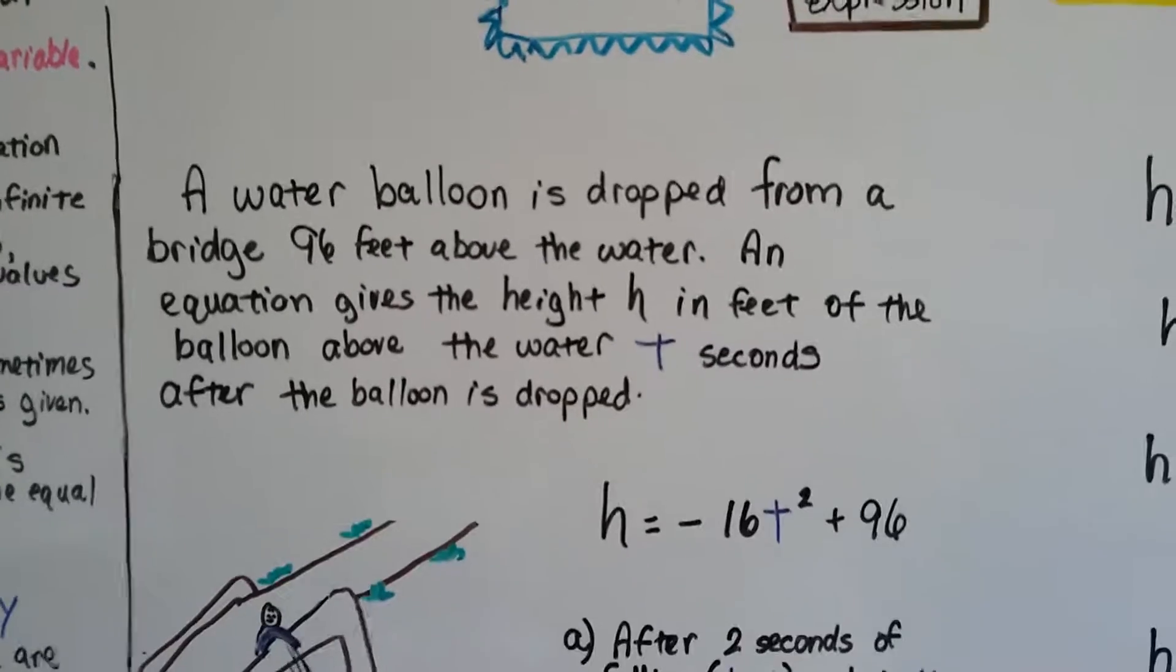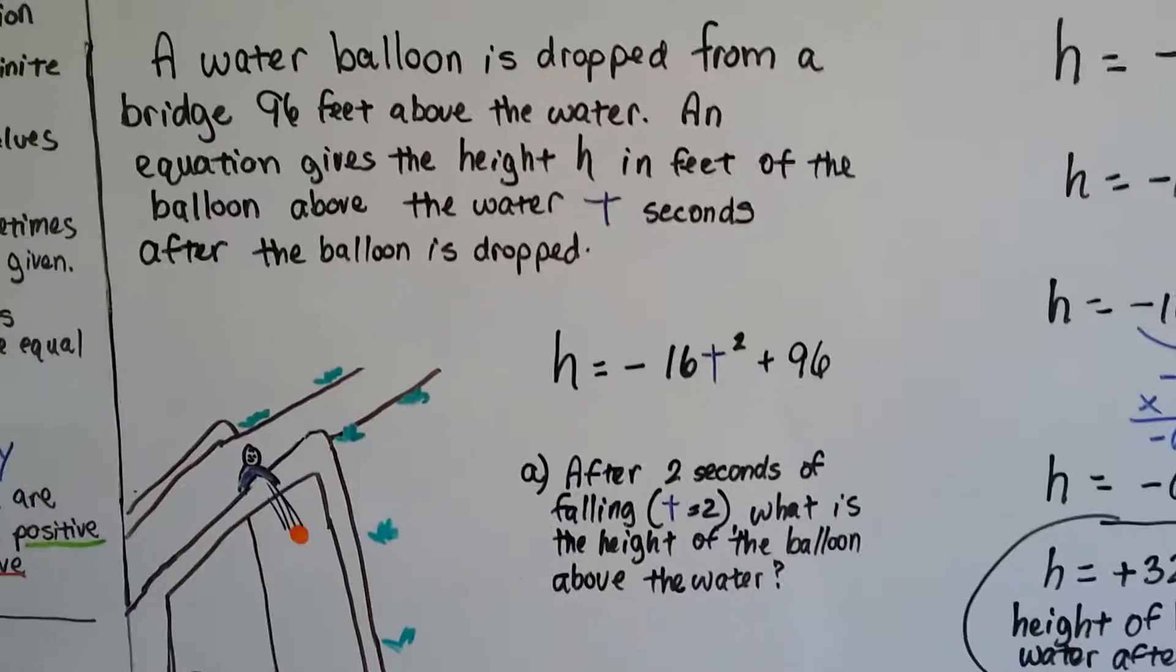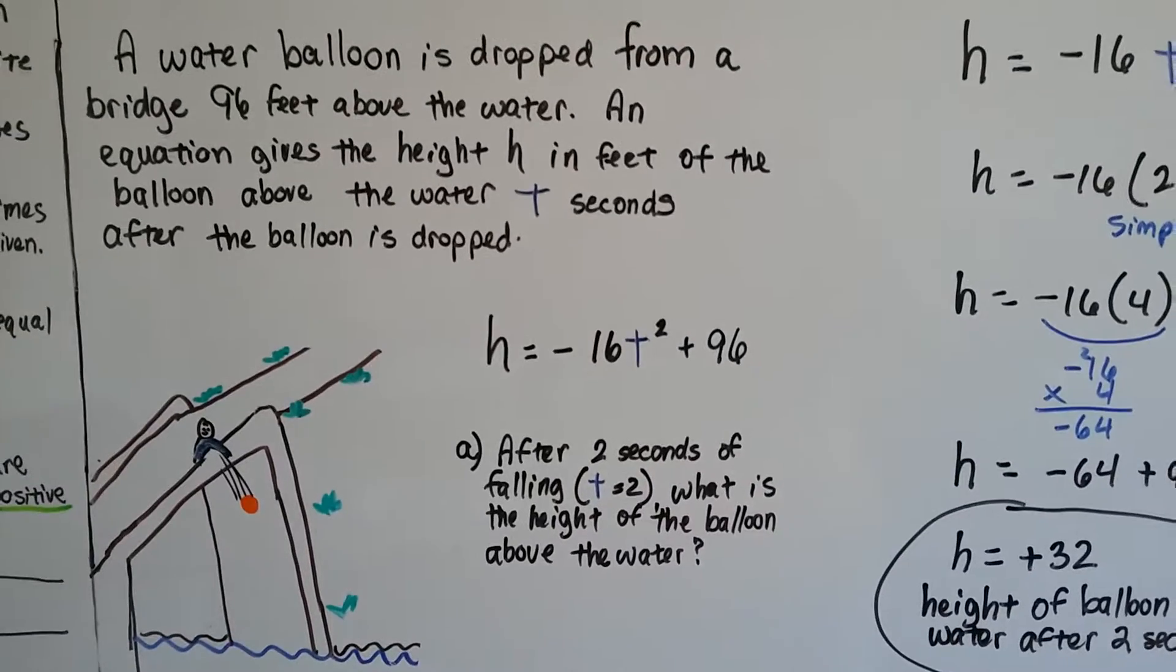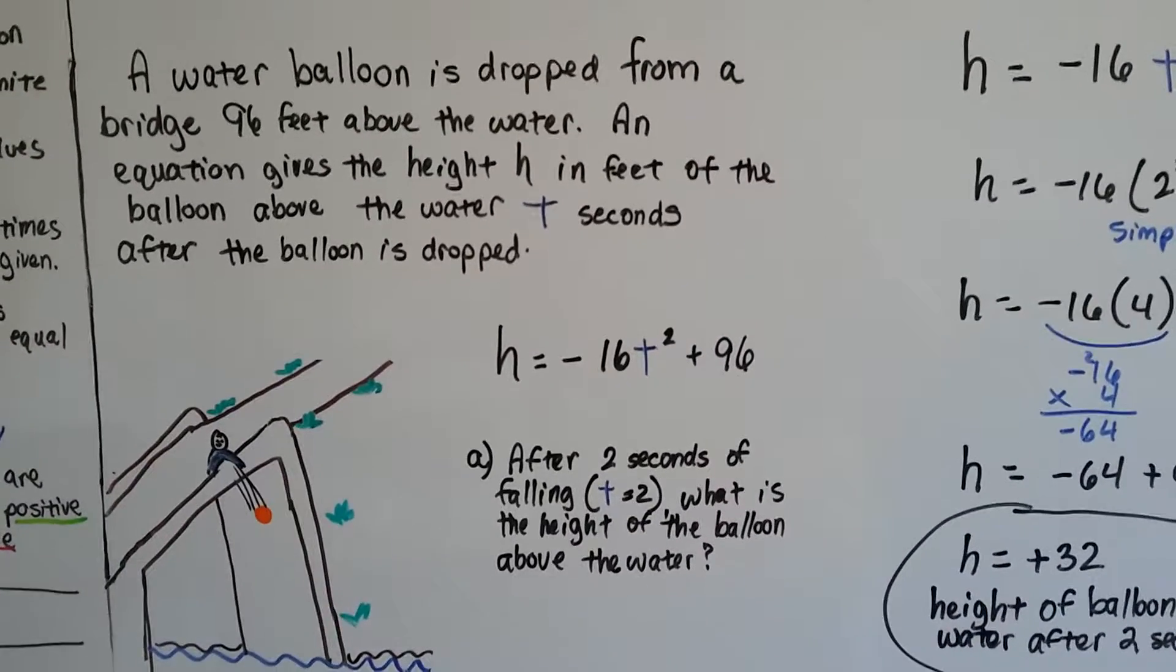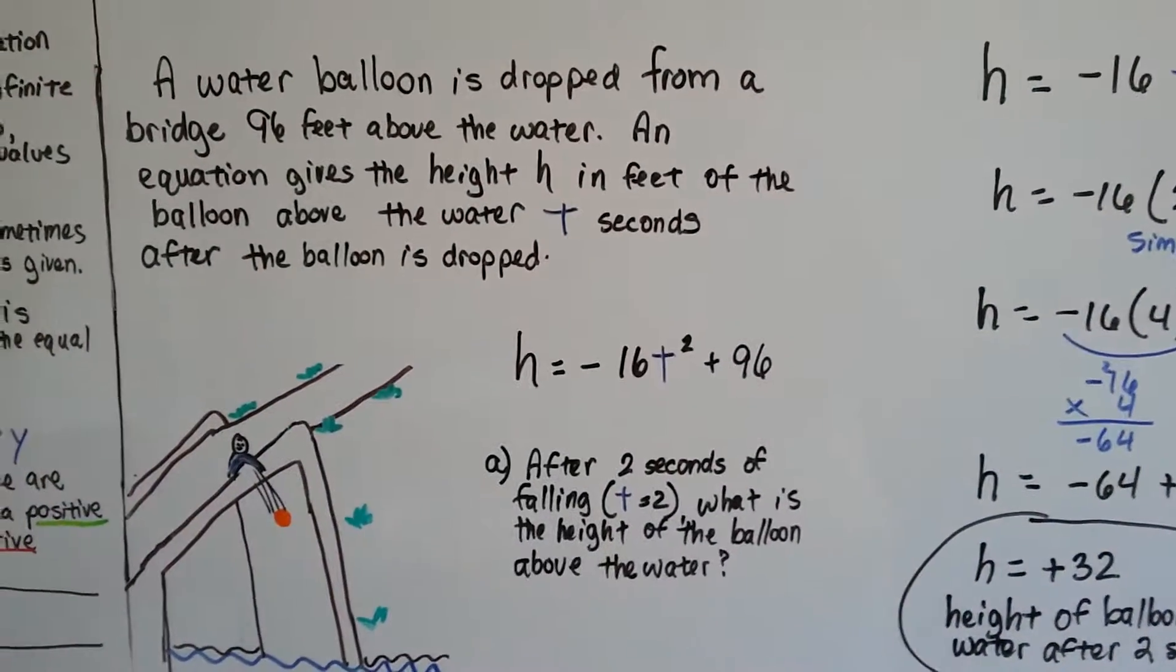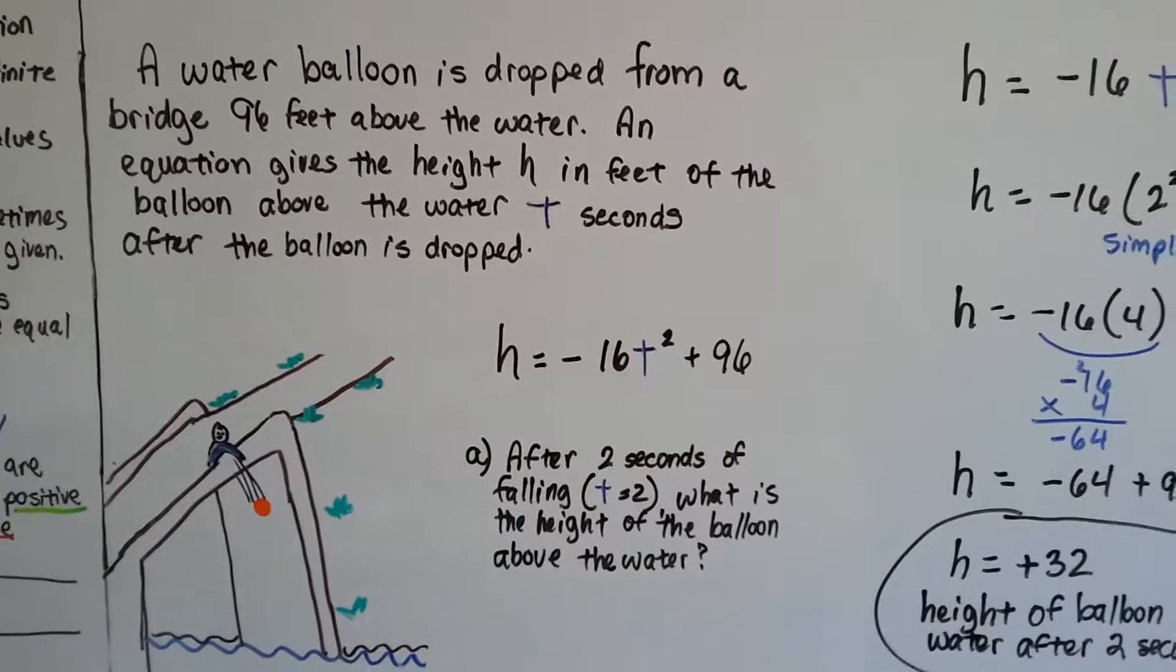A water balloon is dropped from a bridge 96 feet above the water. An equation gives the height h in feet of the balloon above the water t seconds after the balloon is dropped.